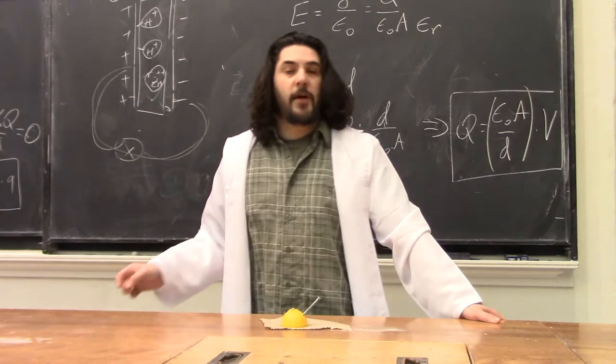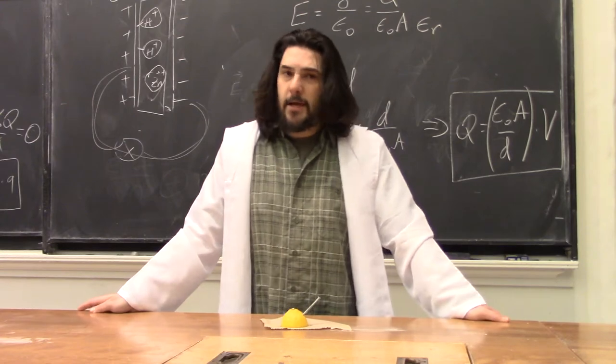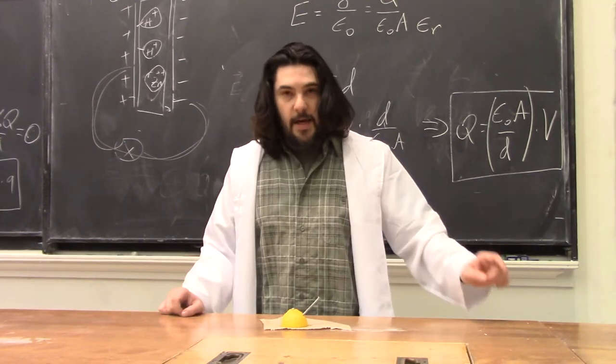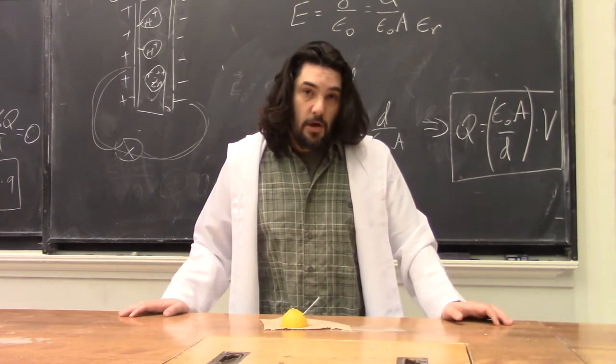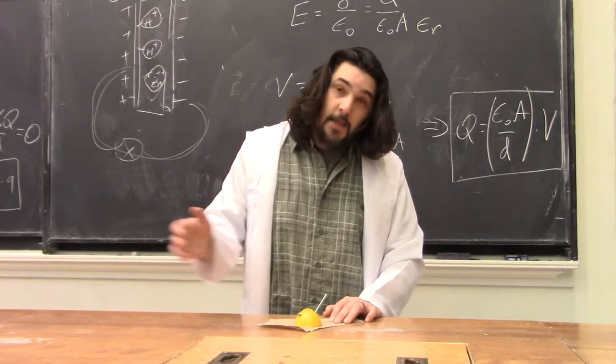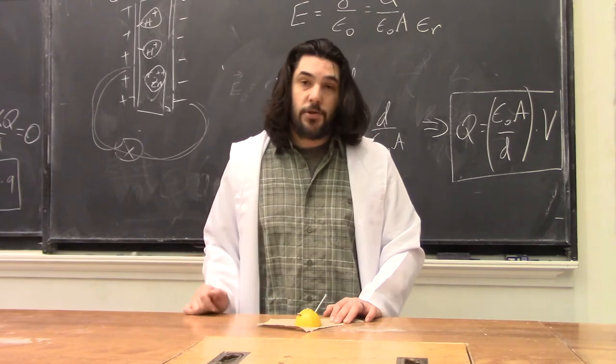The lemon juice inside the lemon provides a great medium for electrochemical reactions. As zinc from this galvanized nail dissolves into the juice, the nail itself becomes negatively charged. As copper from this penny dissolves into the lemon juice, it becomes positively charged.